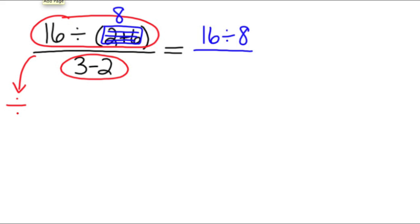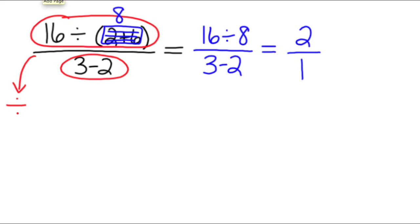Then we're going to copy down that fraction bar, and on the bottom we still have 3 minus 2. The next thing we're going to do is still look at the numerator. We still have 16 divided by 8, so all we have to do is figure out what that answer is. 16 divided by 8 is 2. Put a 2 in the numerator. Then you have your fraction bar, and the last thing we can do is figure out what 3 minus 2 is. 3 minus 2 is 1. Now, this looks like a fraction but it is also a division problem. So this is the same as saying 2 divided by 1, and the answer would be 2.